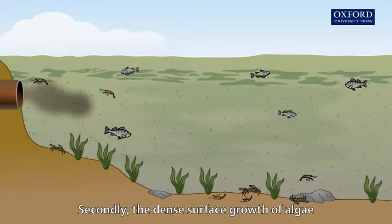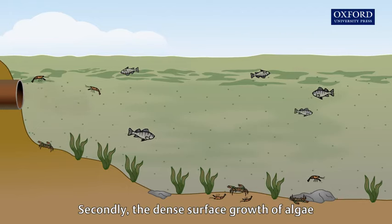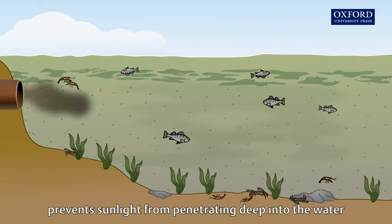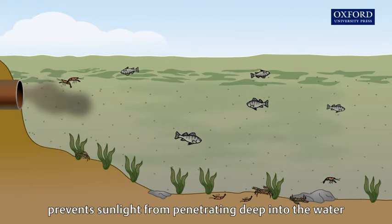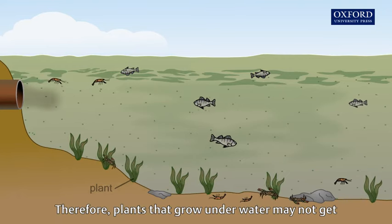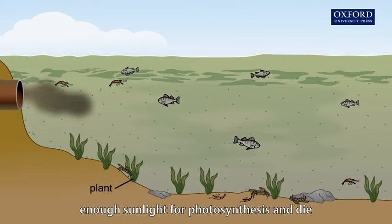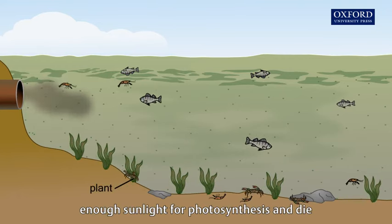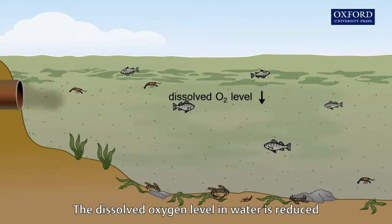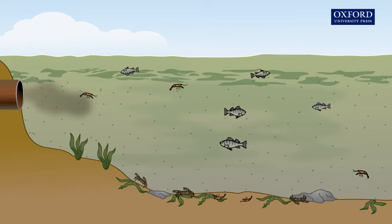Secondly, the dense surface growth of algae prevents sunlight from penetrating deep into the water. Therefore, plants that grow underwater may not get enough sunlight for photosynthesis and die. The dissolved oxygen level in water is further reduced.